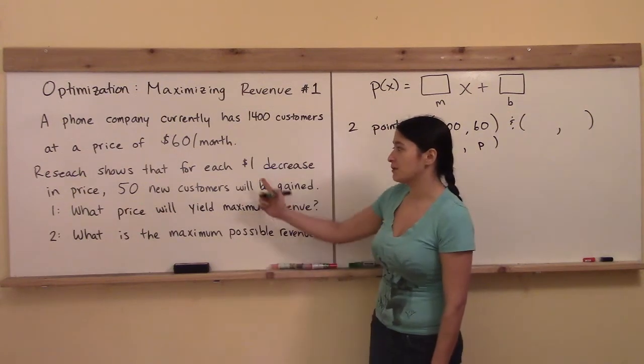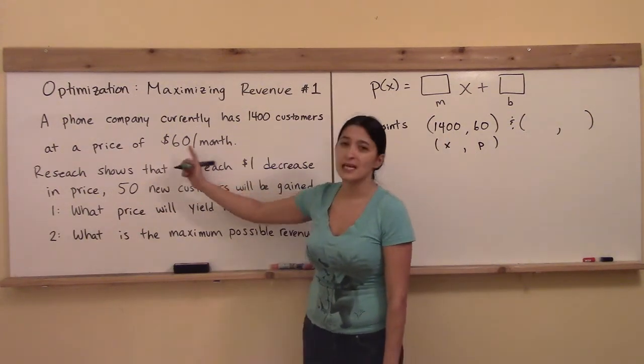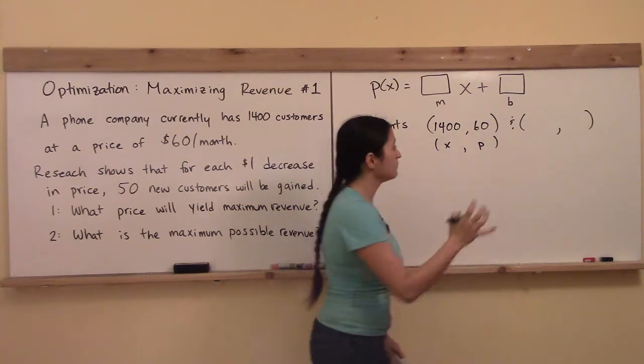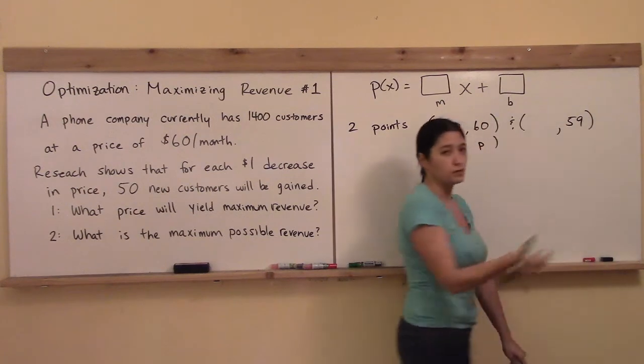Like for example, if the price went down for $1 less, instead of 60, what would it be? 59, right? So if the price was 59, then it went down $1.